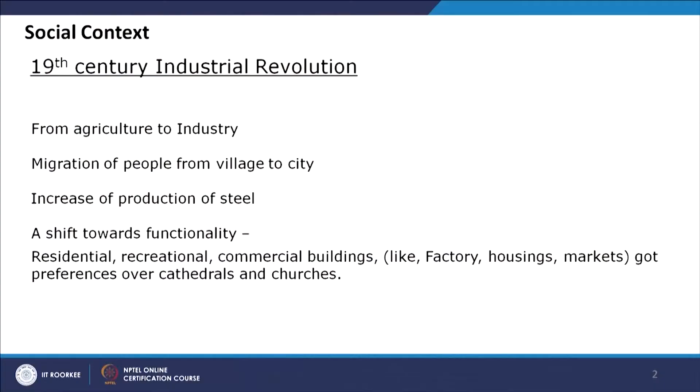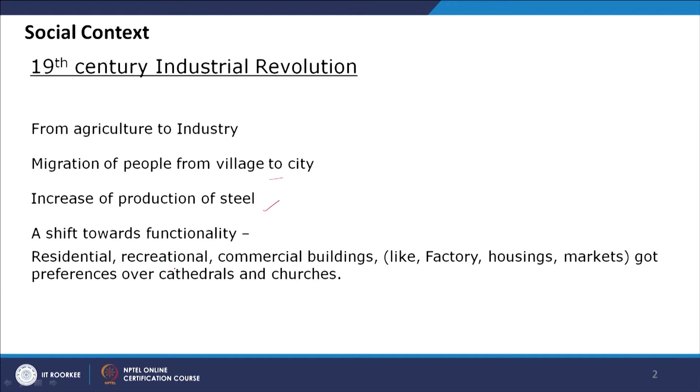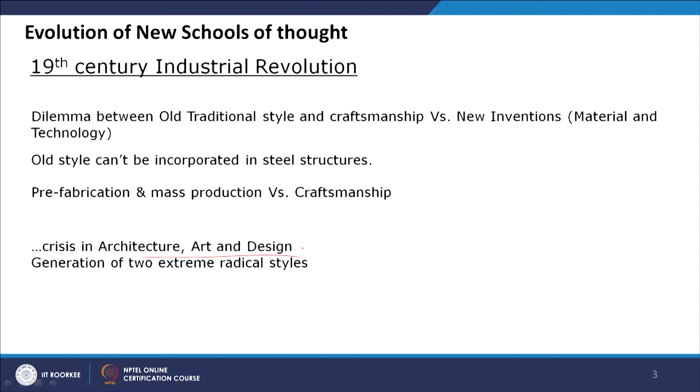In the post-industrial revolution, there were two parts as discussed earlier: one for the machine movement and another against the machine movement. As a brush-up, the shift from agriculture to industry led people to migrate from village to city. There was an increase in new technology such as steel and glass, and new kinds of products started evolving. New requirements emerged for commercial, residential, and public amenity buildings. In totality, there was a crisis in architecture, art, and design style.